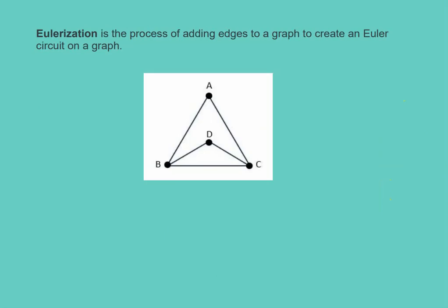Eulerization is the process of adding edges to a graph to create an Euler circuit. To Eulerize a graph, edges are duplicated to connect pairs of vertices with odd degree. Connecting two odd-degree vertices increases the degree of each vertex, giving them both even degrees. In this diagram, vertices B and C both had odd degrees, so we can Eulerize it by making another path from B to C.